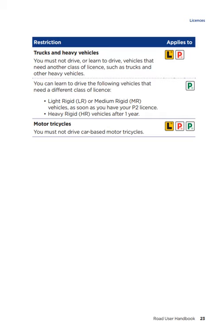You can learn to drive the following vehicles that need a different class of licence when you hold a provisional P2 licence: light rigid or medium rigid vehicles as soon as you have your P2 licence, and heavy rigid vehicles after one year. Motor tricycles: this applies to learner licence holders, provisional P1 and provisional P2 licence holders. You must not drive car-based motor tricycles.